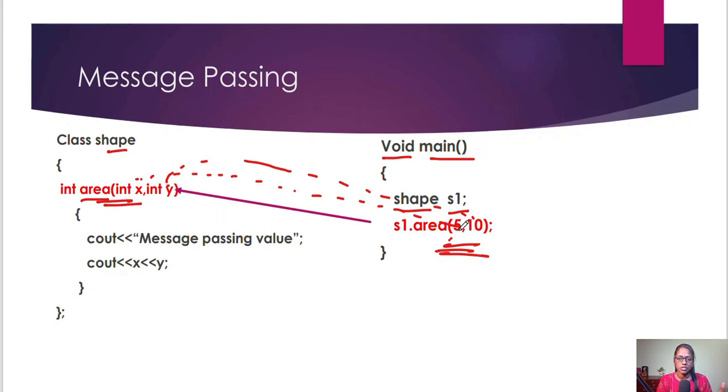Whenever you are calling the member function, you are passing the value from main to this member function, right? And then see what message passing is, that is 5, and then it will give the output 5 and 10, right?